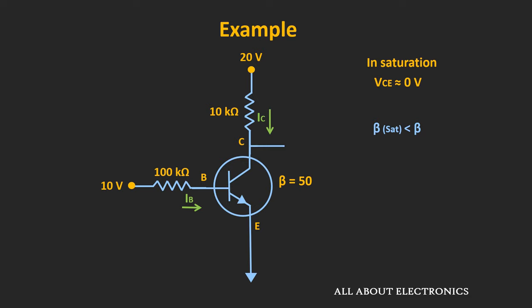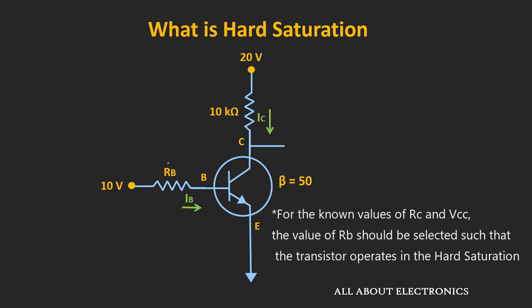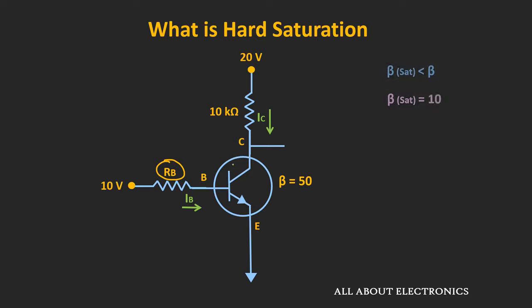But if the value of β changes, then it is possible that the circuit may come out of the saturation. For example, if the transistor is replaced or if the circuit is operating at a lower temperature, then the value of β will reduce, and due to that the circuit may come out of the saturation. So when we want to operate the transistor in saturation in all conditions, the value of the base resistance Rb should be selected such that the value of the current gain β is very low — typically it should be around 10. This is called hard saturation.